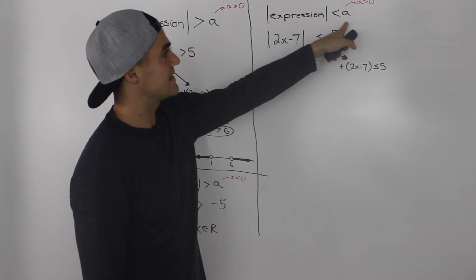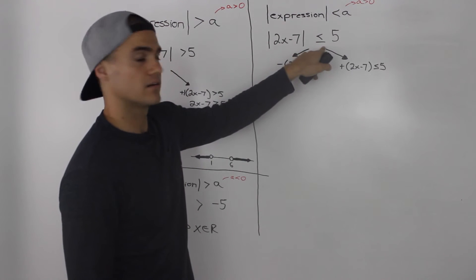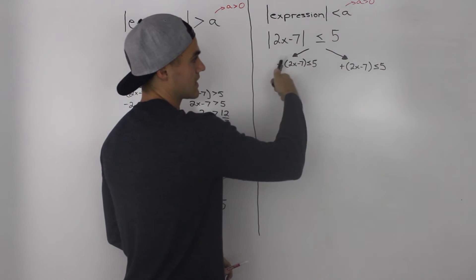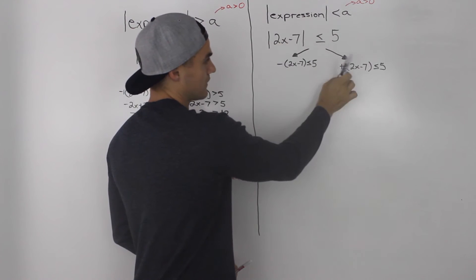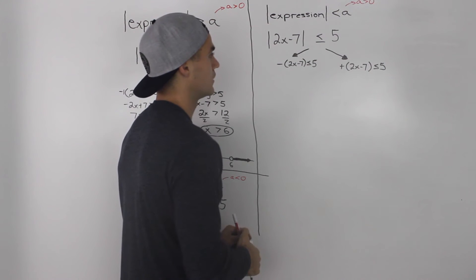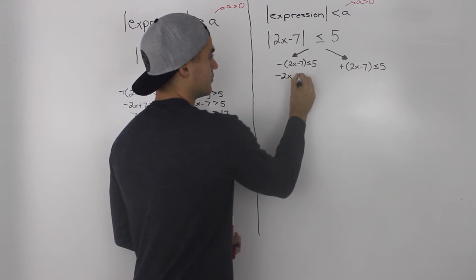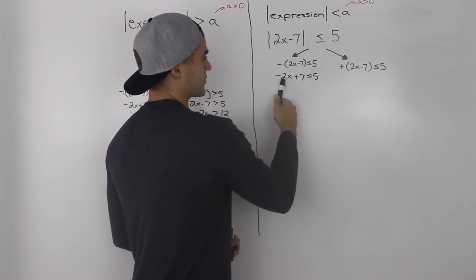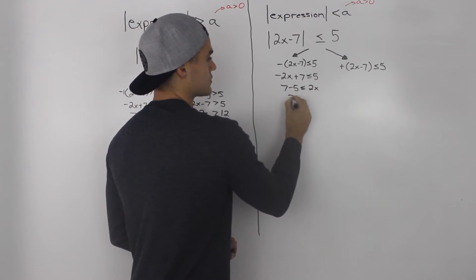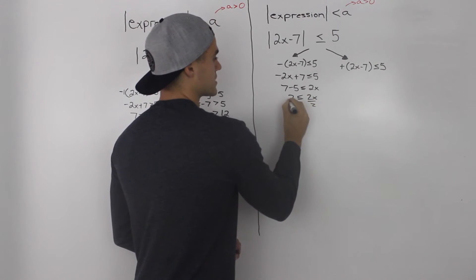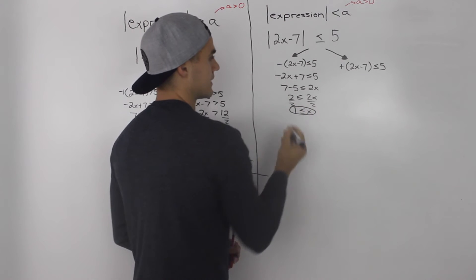Moving on: if you have an expression less than a positive value — let's use the same example but with less than or equal to 5. Same thing applies: split it into two cases, put a negative in front for one case and a positive in front for the other, then solve. Starting with the negative: distributing gives negative 2x plus 7 less than or equal to 5. Bring the negative 2x over and bring the 5 over: 7 minus 5 is less than or equal to 2x. Divide both sides by 2, so when x is greater than or equal to 1, that's one solution.